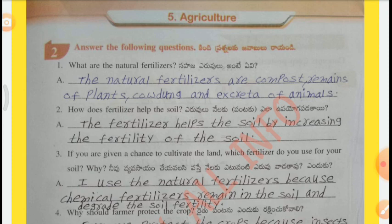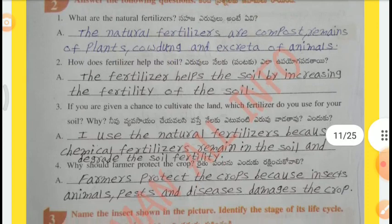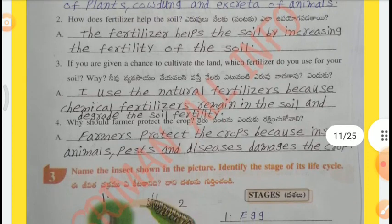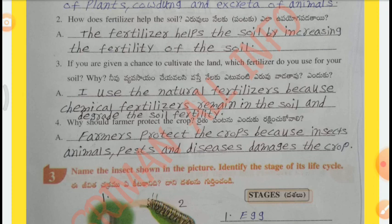Q2: How does fertilizer help the soil? Fertilizers help the soil by increasing the fertility of the soil. Q3: If you are given a chance to cultivate the land, which fertilizer do you use? I use natural fertilizers because chemical fertilizers remain in the soil and degrade the soil fertility. Q4: Why should farmers protect the crop? Farmers protect the crops because insects, animals, pests, and diseases damage the crop.